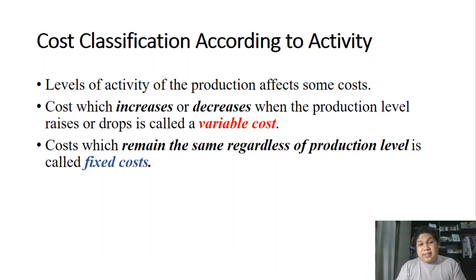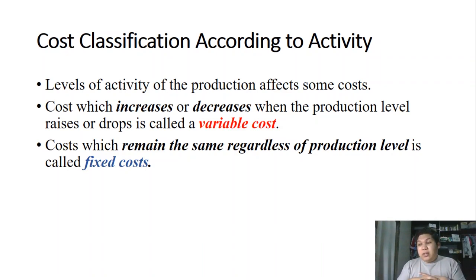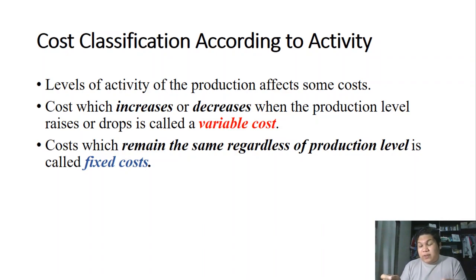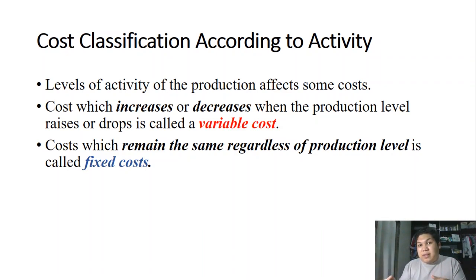Costs that remain the same regardless of production level are called fixed costs. For example, if you have a warehouse and pay rent, that rent is the same regardless of how much merchandise you sell — whether you sell zero or hundreds, the rent stays the same. That is a fixed cost.